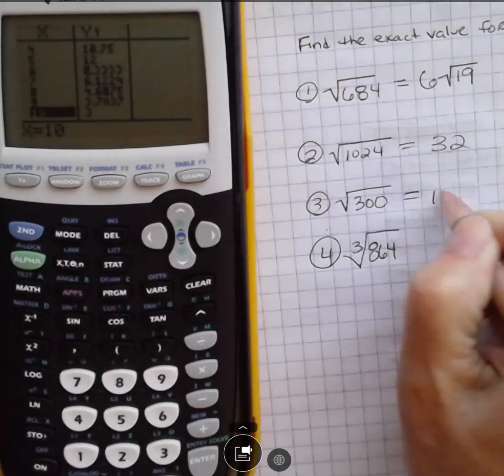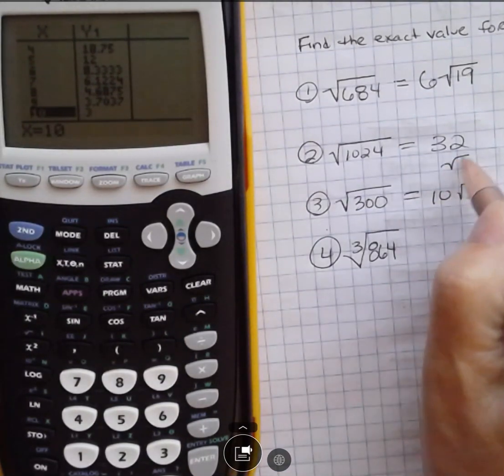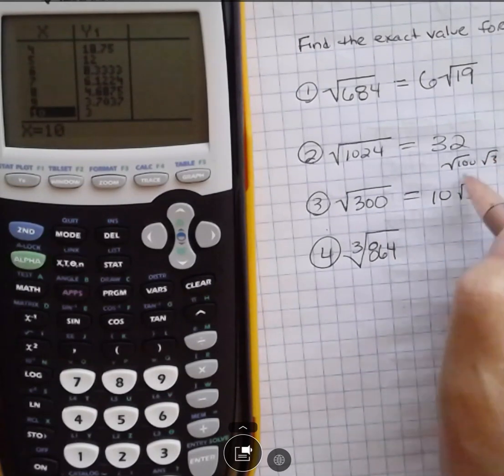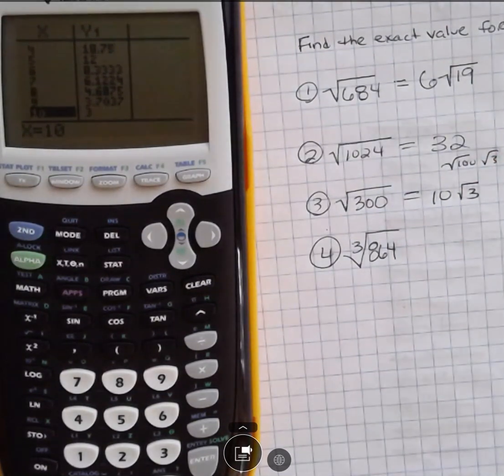And you can know that that's 10 square root of 3 because we know that 300 is the square root of 100 times the square root of 3, and the square root of 100 is 10. You might be able to see that on your own, but you can also use your calculator.